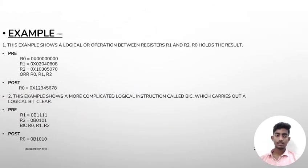Let us see an example of logical instructions. This example shows a logical OR operation between registers R1 and R2. R0 holds the result. Pre: R0=0x0, R1=0x02040608, R2=0x01030507.